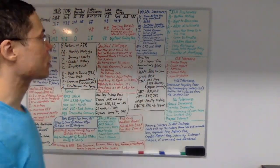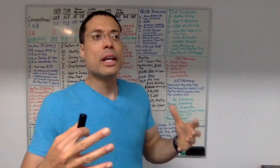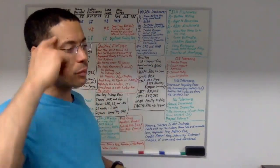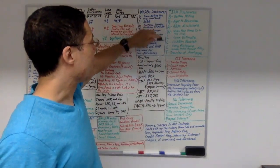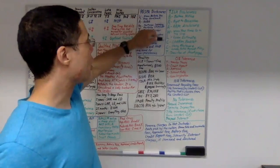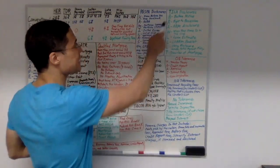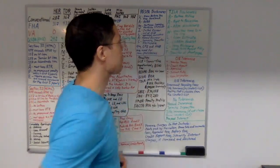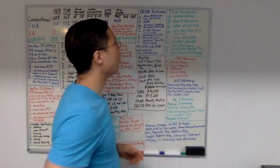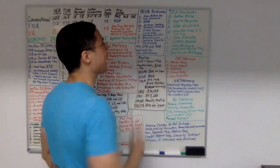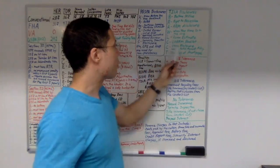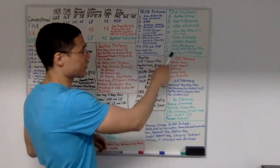TILA disclosures can be remembered with the acronym 'brawl on closed caption TV' (BRAWL CCT): B is balloon notes. R is right to rescission. A is ARM disclosure. W is 'When Your Home Is on the Line.' L is loan estimate. C is CHARM booklet. C is closing disclosure (including partial payment policy). T is transfer of mortgage.